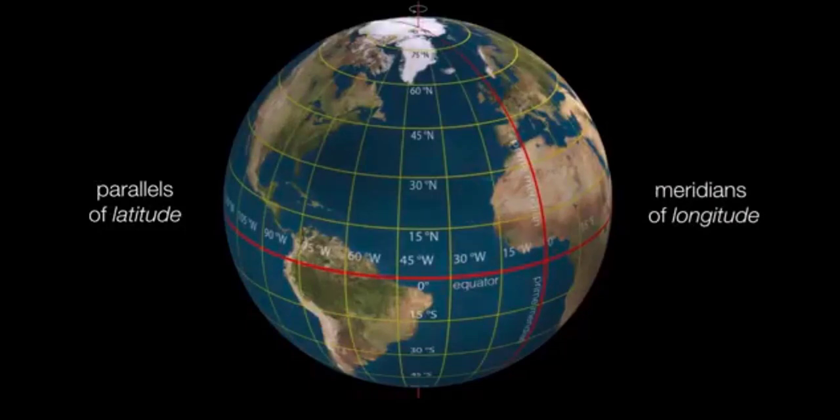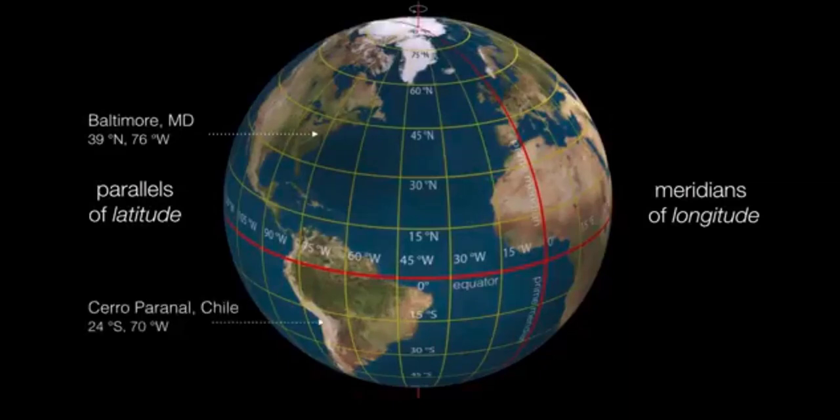So I live near Baltimore. That is somewhere about 39 degrees north latitude and 76 degrees west longitude. Cerro Paranal Chile is home to the European Southern Observatory, and that's at 24 degrees south latitude, 70 degrees west. And Rome, Italy, for example, is at 42 degrees north latitude and 12 degrees east. So that puts Rome on the same latitude approximately as Boston, Massachusetts in the United States.